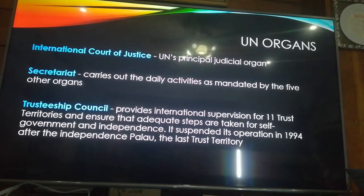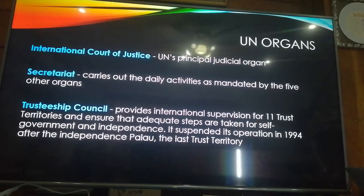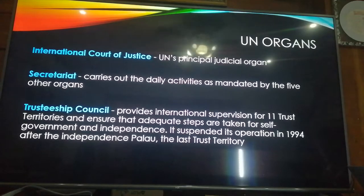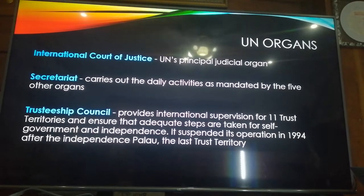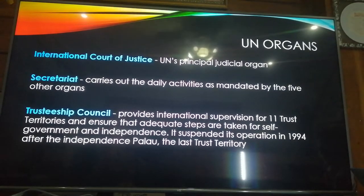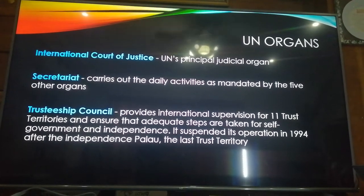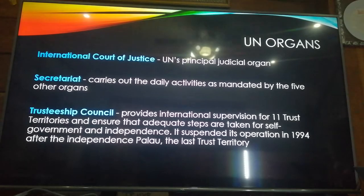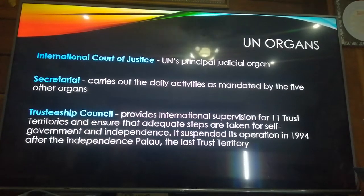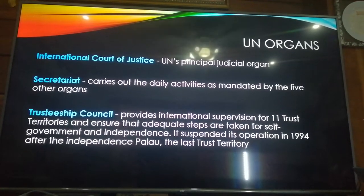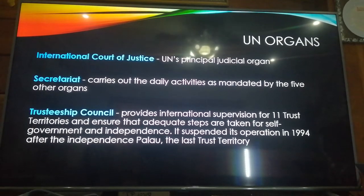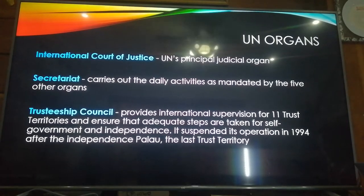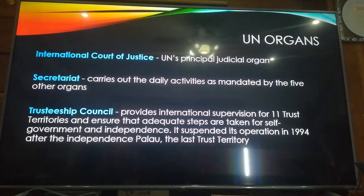But in the actual scenario, China is still occupying the area of the islets in the Philippines. The Secretariat carries out all the day-to-day activities as mandated by the five other organs. The Trusteeship Council provides international supervision for 11 trust territories to ensure adequate steps are taken toward self-government and independence. It suspended operations in 1994 after the independence of the last trust territory. So the Trusteeship Council means the UN can take over managing a country while waiting for it to improve its governance.